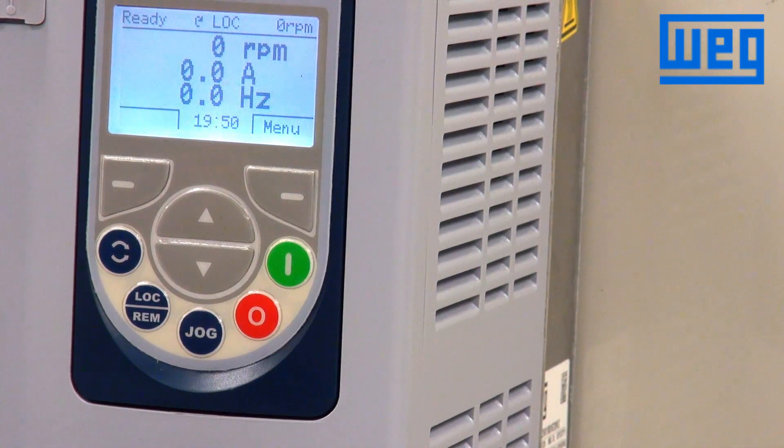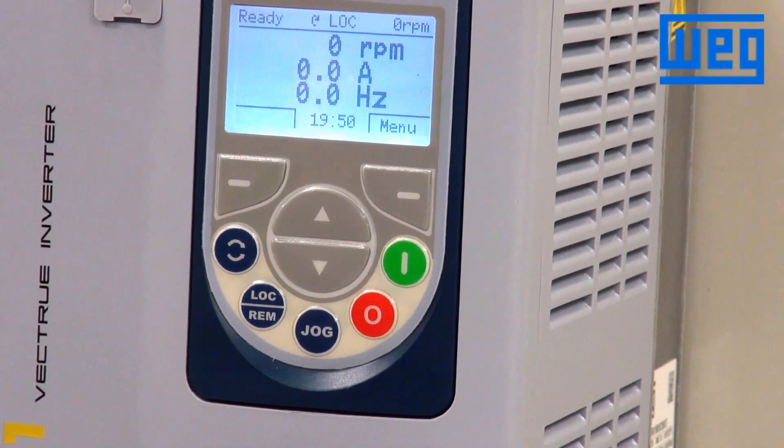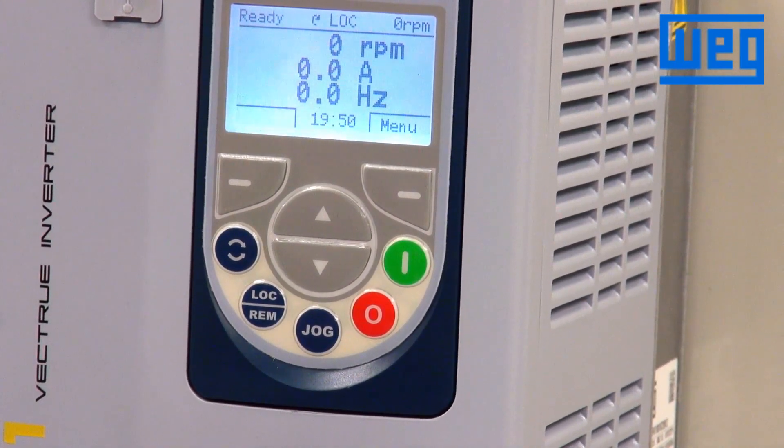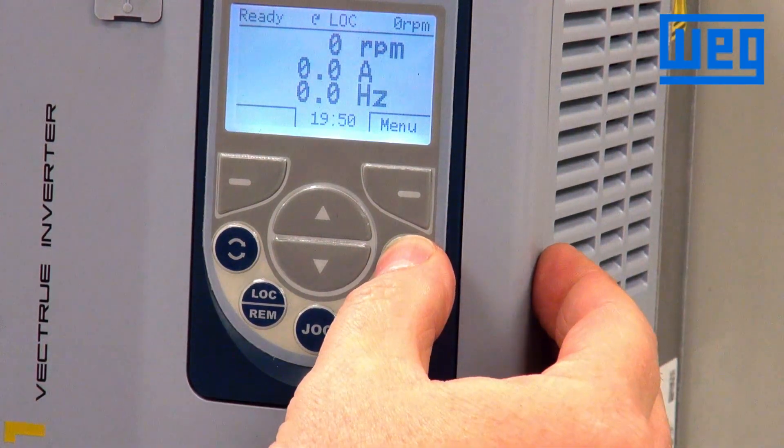Since we are powered up, we are wired to the motor. From out of the box, the drive can operate this motor. All we have to do is press the green run key.